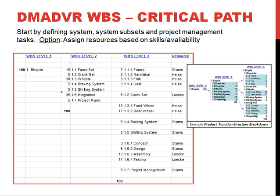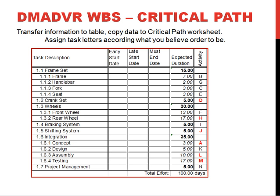Here we have the critical path worksheet where we've got the function tree established and listed the persons we'd like to track each task. We have a three-person team consisting of Starns, Heise, and Lukey. We put in the durations, and now we assign labels for each activity or task. The lettering has been placed in the order we believe they will happen on the project plan, and from here we start putting together the work path flow diagram.